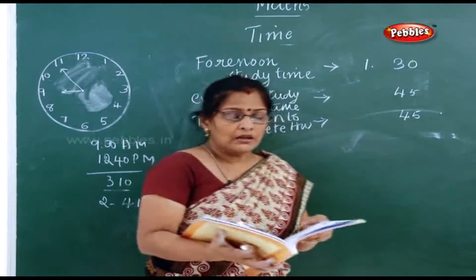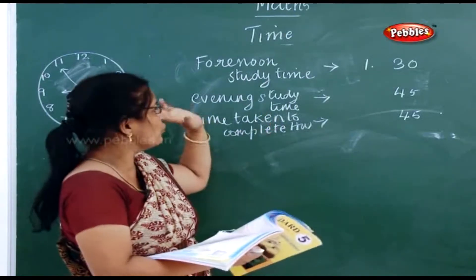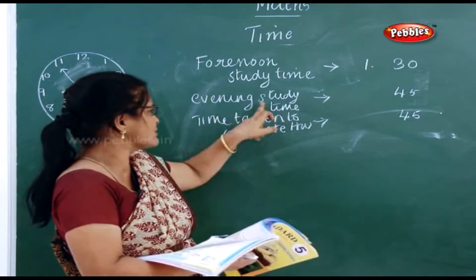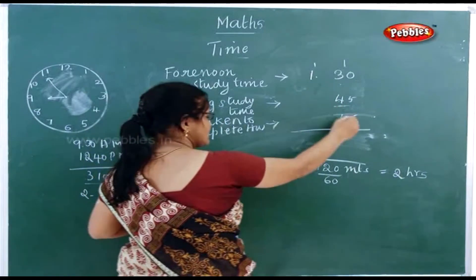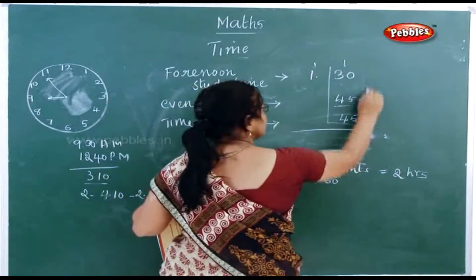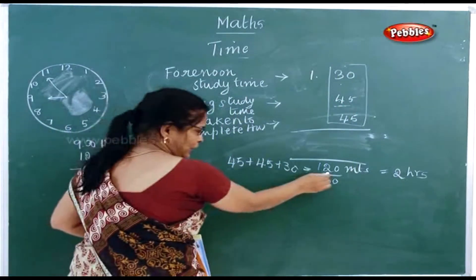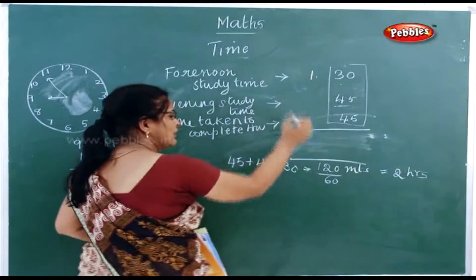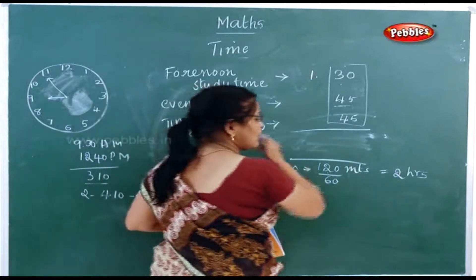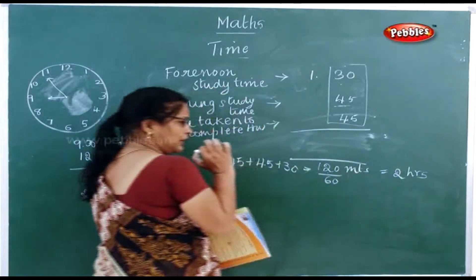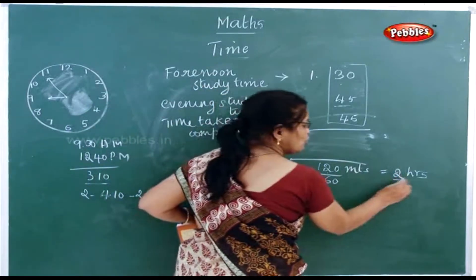The question asks for the total time taken by Joseph to complete his work and study at home. So this 30 minutes, 45 minutes, and 45 minutes — you add all of these minutes together. You get 120 minutes. This 120 minutes can be converted into hours by dividing by 60, and you get 2 hours.